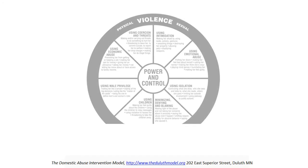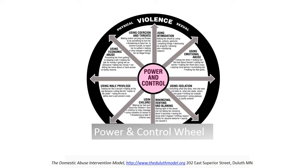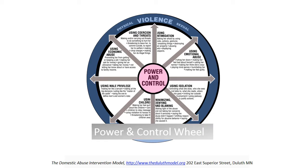One way to visualize the dynamics of domestic violence is with a power and control wheel. Power and control are in the center of the wheel. The spokes of the wheel are tactics an abuser systematically uses to instill fear in a partner. Physical and sexual violence often occur less frequently, but hold it all together — this violence is the rim of the wheel.